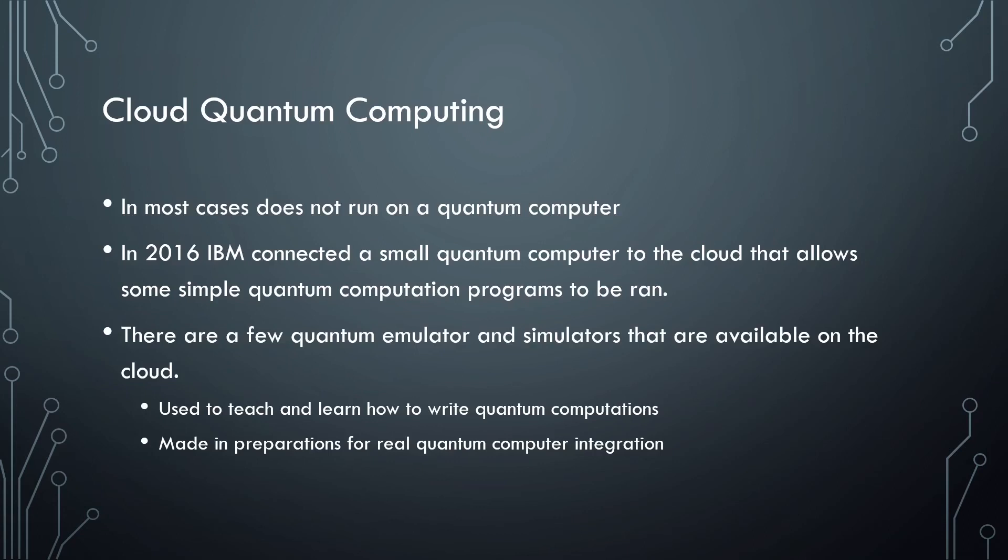There are currently efforts to make quantum computing more accessible. The main strategy for this is cloud quantum computing. In 2016, IBM connected a small quantum computer to the cloud that allowed some simple quantum computation programs to be ran. This marked the start of cloud quantum computing. The IBM machine is one of the few actual cloud quantum computers.